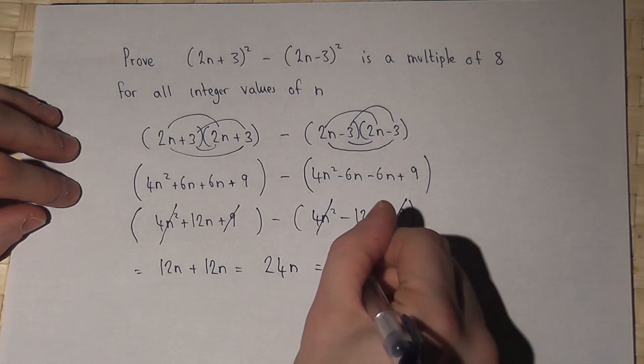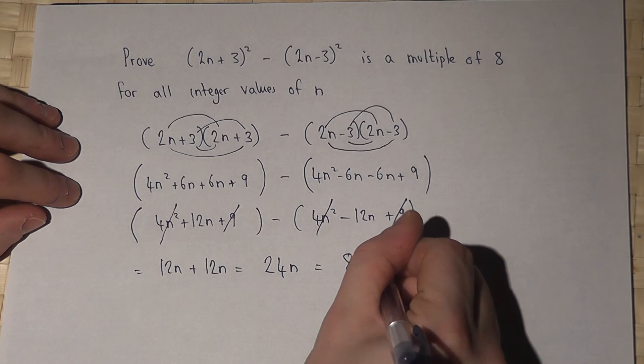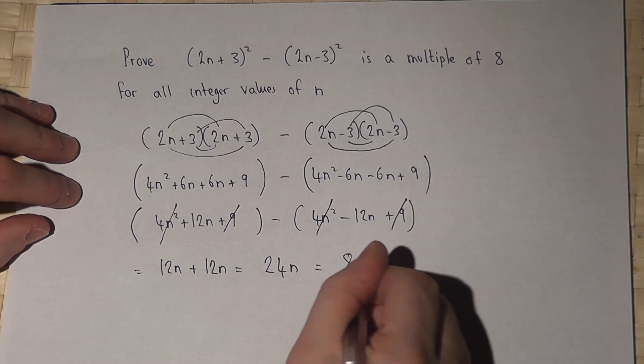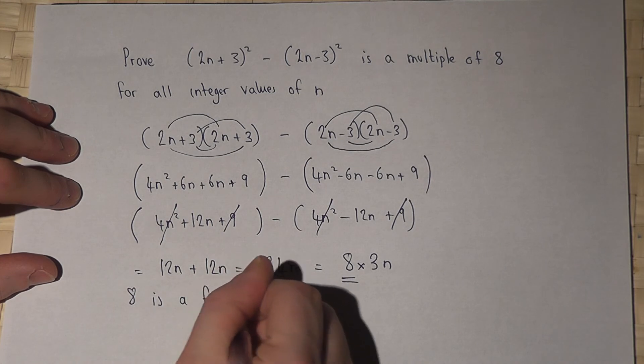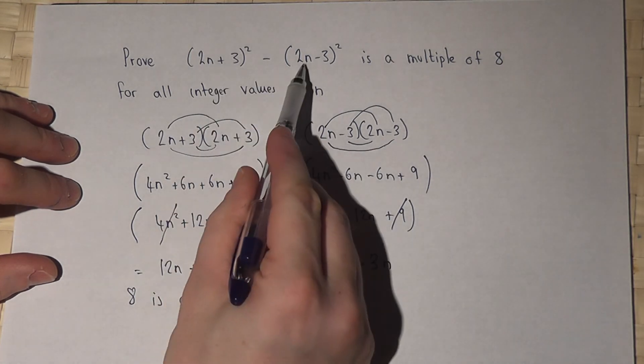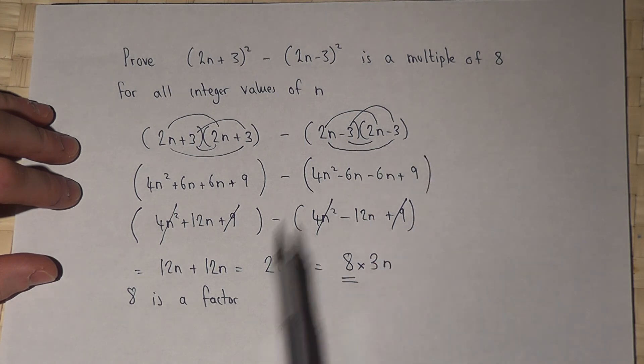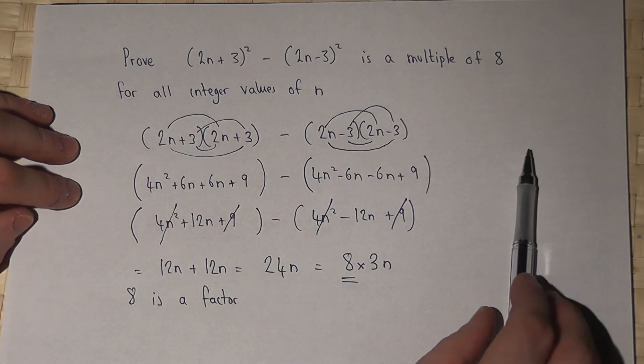Now this equals 8 lots of 3n. So look, 8 is a factor, so therefore this expression here must be a multiple of 8, as long as n is a whole number.